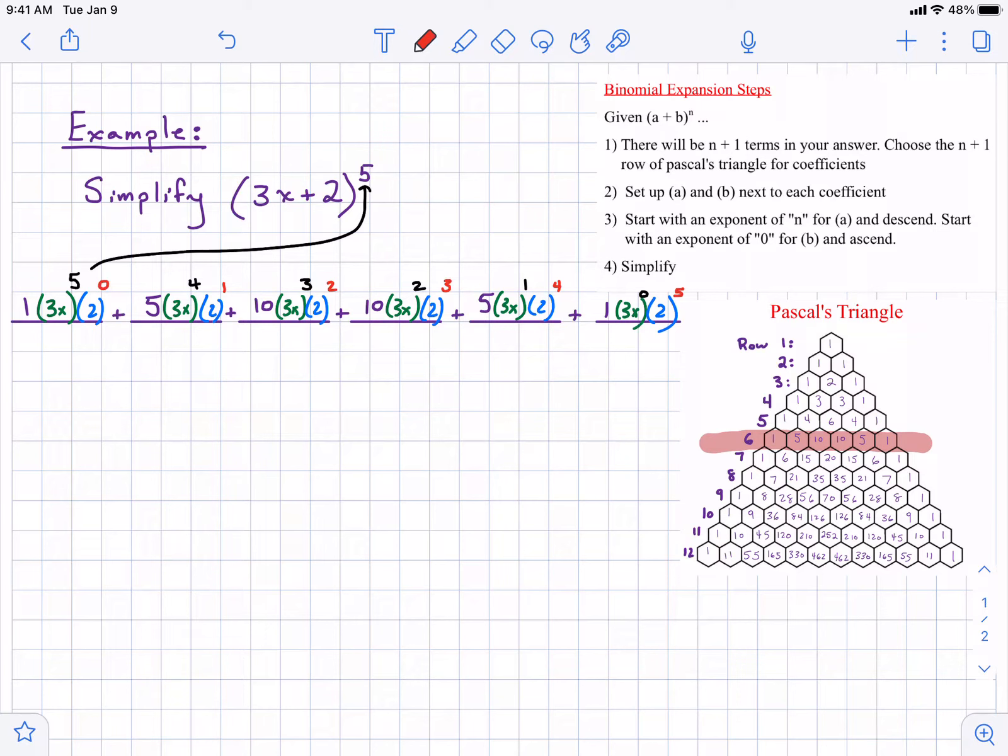Now notice the exponents here always add up to 5. That's something else that people will do quickly here. There's a pattern - the two exponents will add up to 5 if you want to do a quick check.